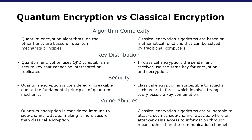Next we have vulnerabilities. Classical encryption algorithms are vulnerable to side channel attacks, where the attacker gains information through means other than the communication channel, such as power consumption or electromagnetic radiation. Quantum encryption is considered immune to side channel attacks, making it more secure than classical encryption.